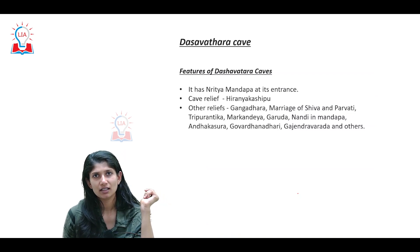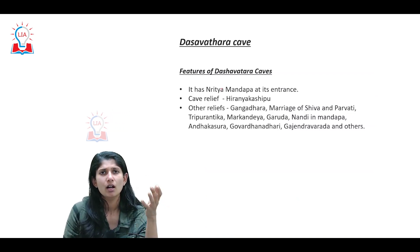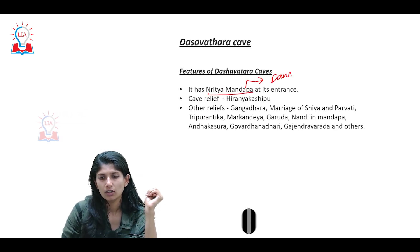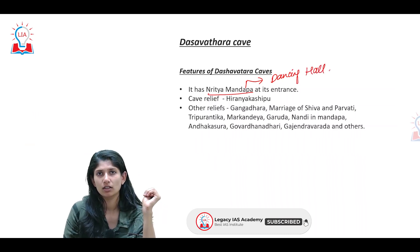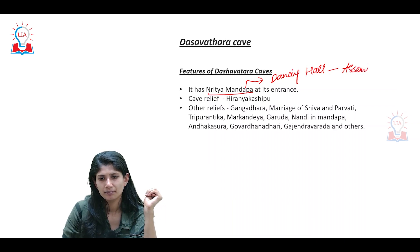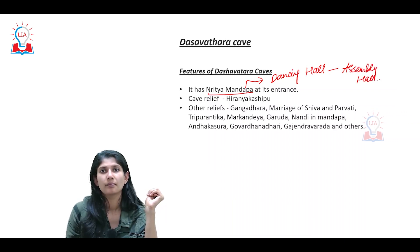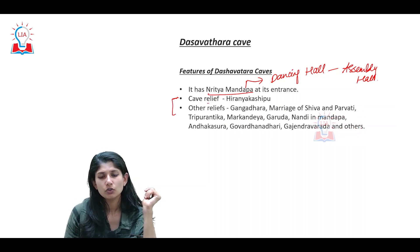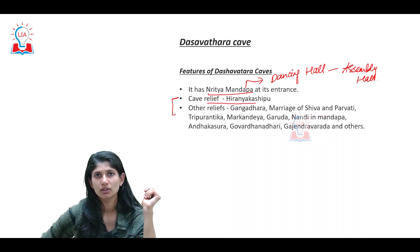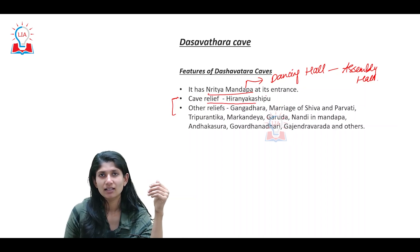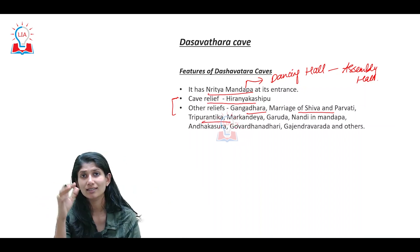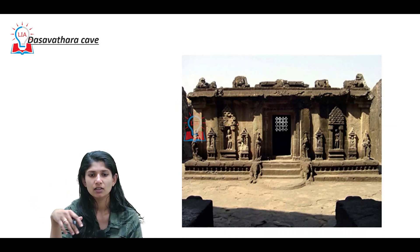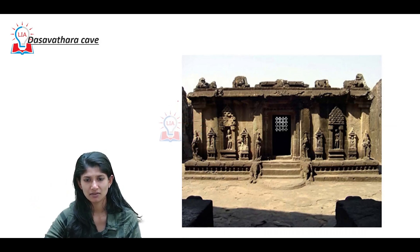Next is the Dasavatara Cave. The most important feature of the Dasavatara Cave is that it has a Nritya Mandapa, or dancing hall — a huge assembly hall. From a prelims perspective, this is very important: the cave houses the relief structure of Hiranyakashipu. Other reliefs include Gangadhara, the Marriage of Shiva and Parvati, Tripurantaka, and other relief structures.